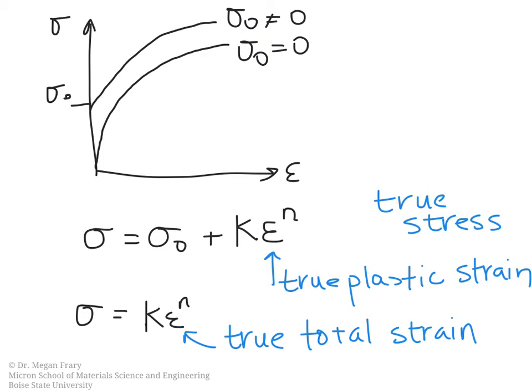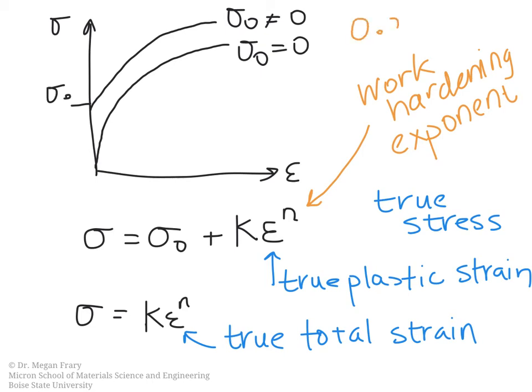So this coefficient n here, this is what is called the work hardening exponent. And depending on the value of n, that is what shapes the curve. And typically takes on a value between 0.2 and 0.5 in real materials. And the last thing is about this k, so this is sort of like the stress multiplier. And k typically takes on a value in between G over 100 and G over 1000, where G is the shear modulus.